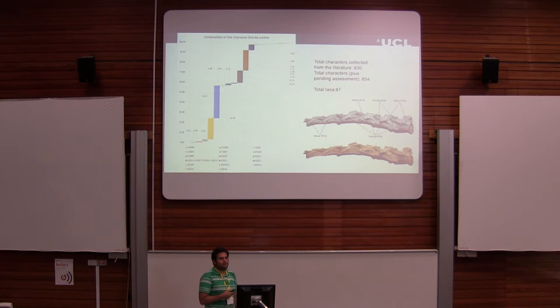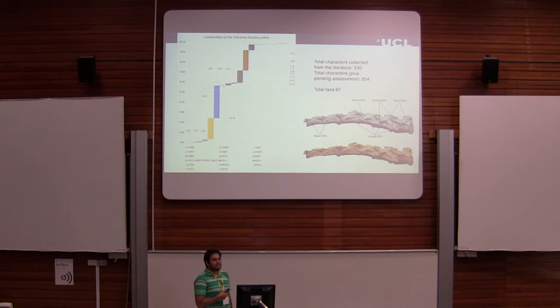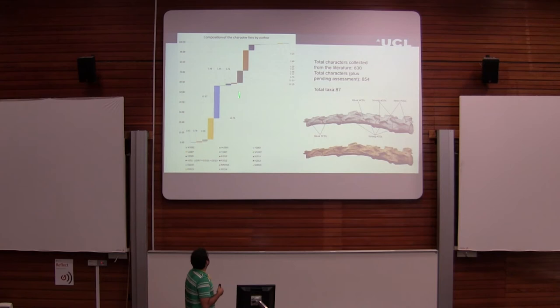The super matrix approach basically has this philosophical background: the fossil record is already a sampling process, so if you can use as many fossils as you can and as many characters as you can, then you are approaching closer to a more valid model. That's the background of using the super matrix approach, though obviously you can argue some points of it.